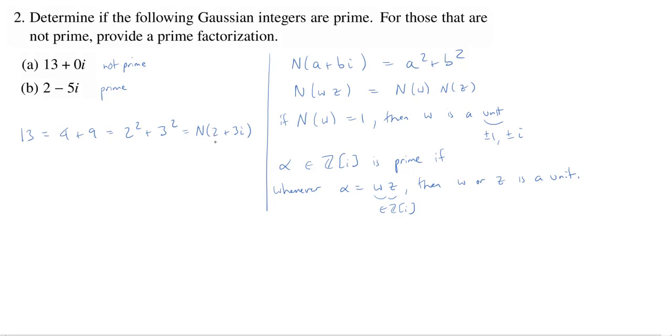Another way that we can get the norm is we can get it by taking a plus bi and multiplying it by its complex conjugate, a minus bi. So what that tells us is that 13 is going to equal 2 plus 3i times 2 minus 3i, and neither of these is a unit. So we have a factorization of 13 as a product of Gaussian integers.